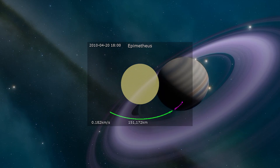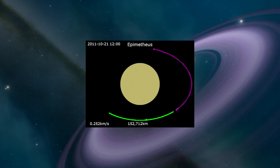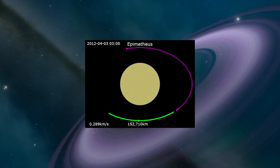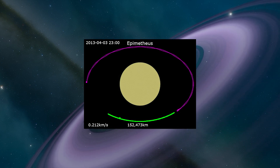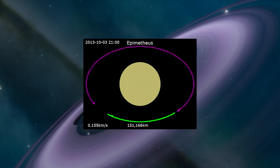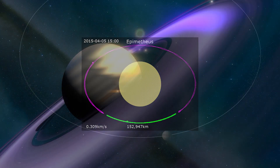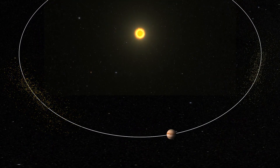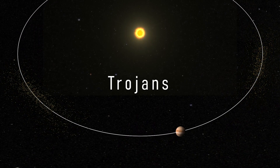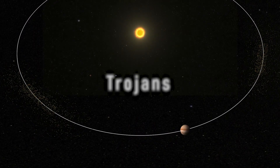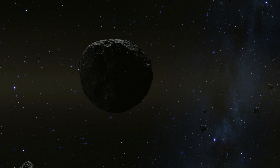Another type of specific mean motion resonance is co-orbit resonance. This occurs when two or more bodies share the same orbit around an object. Within our solar system, the best example of this are the Trojans, which co-orbit with Jupiter leading or trailing its orbit by 60 degrees.